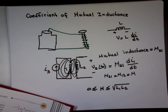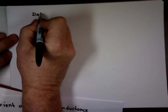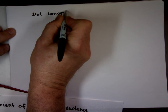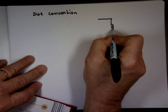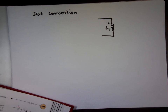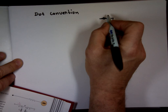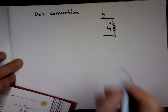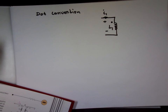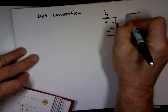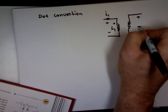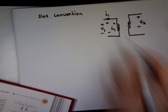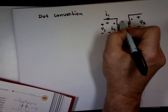Let's look at the dot convention — do we add or subtract? Let's take this example. This is L1; I'm going to put the dot here on the top. Let's set a current I_1 going through that, marking this inductor plus to minus. Now let's take this second one — we'll call that V2. This is V1. And let me put the dot for this right here. There's a mutual inductance between them called M.